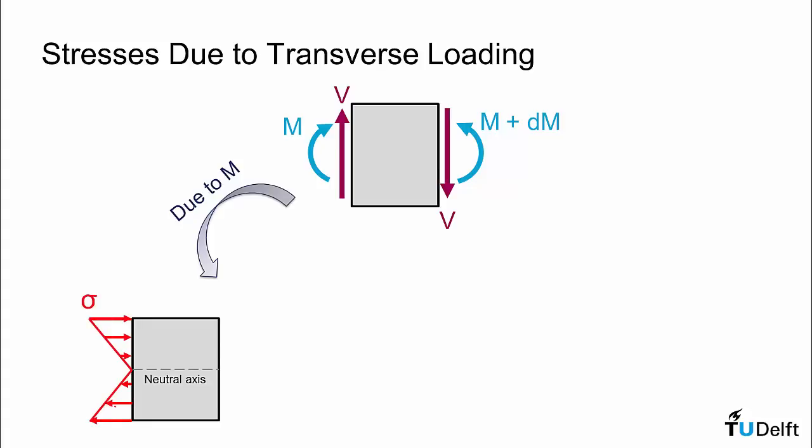Well we know that due to that bending moment loading, we will have a linear varying normal stress distribution, as shown here on the left, with a similar distribution on the right, which will be slightly different. It will vary by a small amount, d sigma, due to the variation in our bending moment.